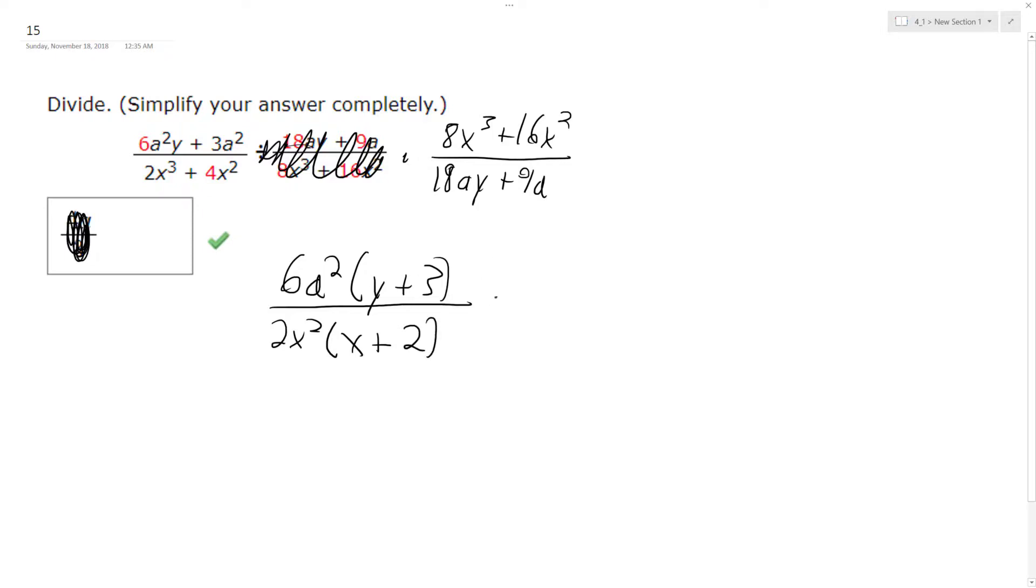Times, factor out an 8, excuse me, 8x squared, x plus 2. Factor out a 9, or 9a, and I get 2y plus 1.